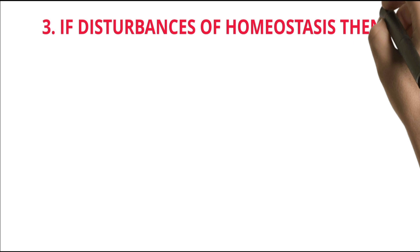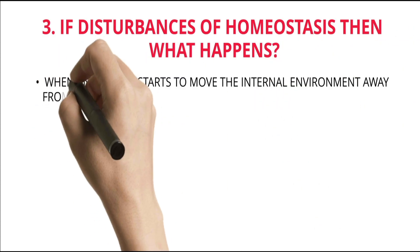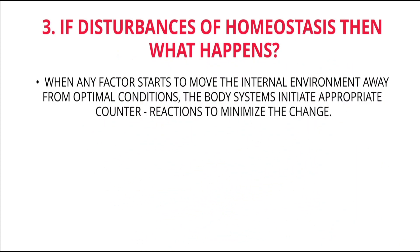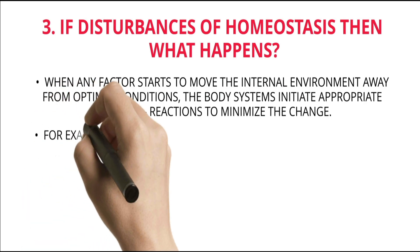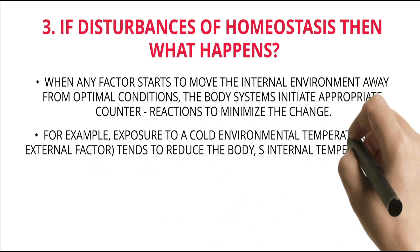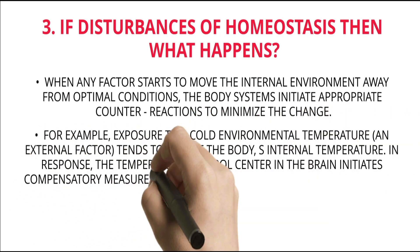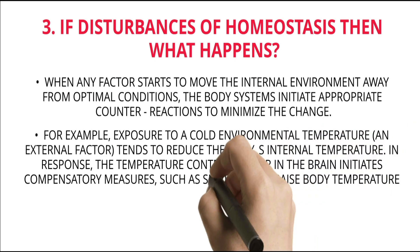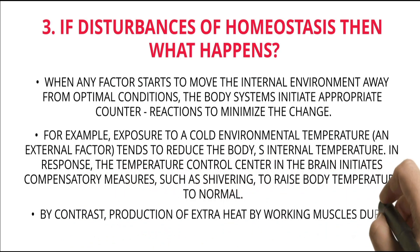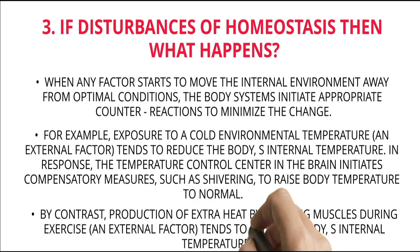If disturbances of homeostasis, then what happens? When any factor starts to move the internal environment away from optimal conditions, the body systems initiate appropriate counter-reactions to minimize the change. For example, exposure to a cold environmental temperature, an external factor, tends to reduce the body's internal temperature. In response, the temperature control center in the brain initiates compensatory measures such as shivering to raise body temperature to normal. By contrast, production of extra heat by working muscles during exercise, an external factor, tends to raise the body's internal temperature.